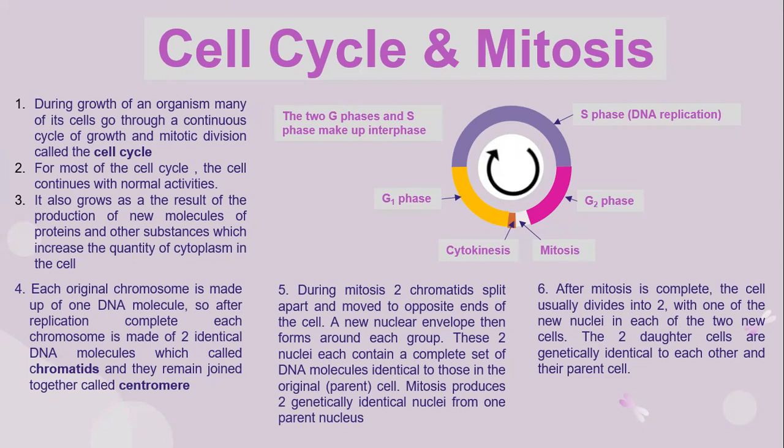During mitosis, the two chromatids split apart and move to opposite ends of the cell. A new nuclear envelope then forms around each group, and these two nuclei each contain a complete set of DNA molecules identical to those in the original parent cell. Mitosis produces two genetically identical nuclei from one parent nucleus. After mitosis is complete, the cell usually divides into two, with one of the new nuclei in each of the two new cells. The daughter cells are genetically identical to each other and to their parent cell.